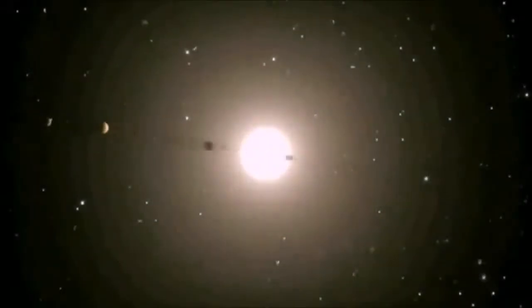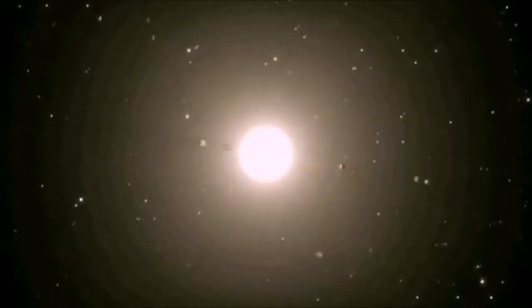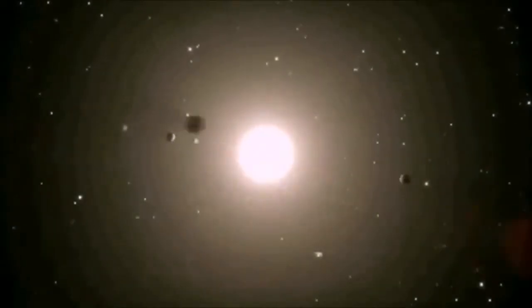Because planets are small and shine by reflected light, they tend to be washed out in the glare of the local sun.